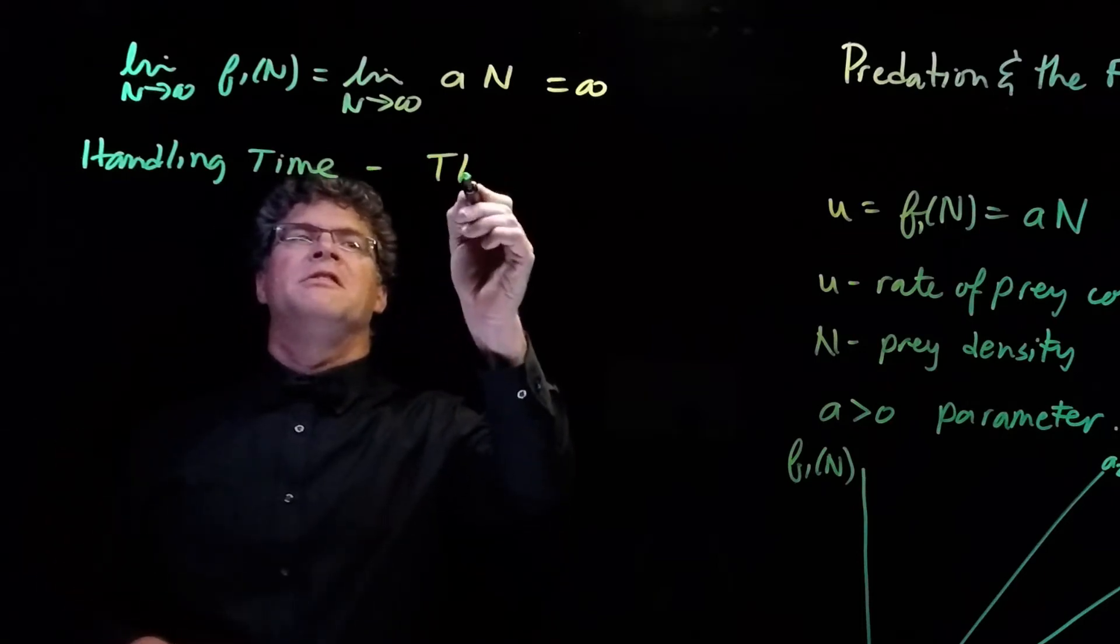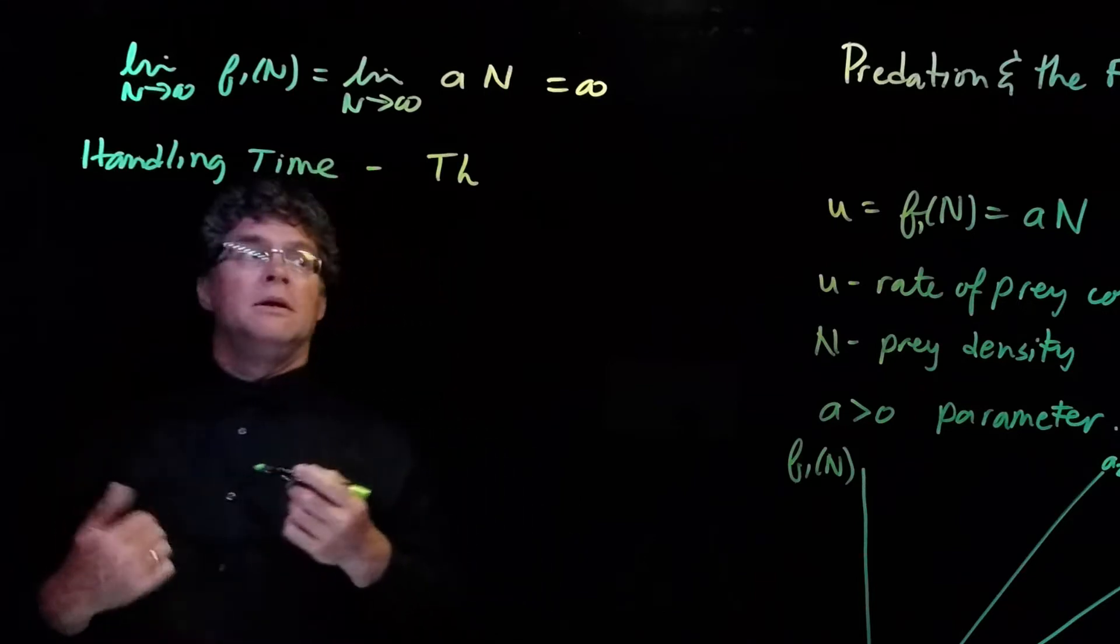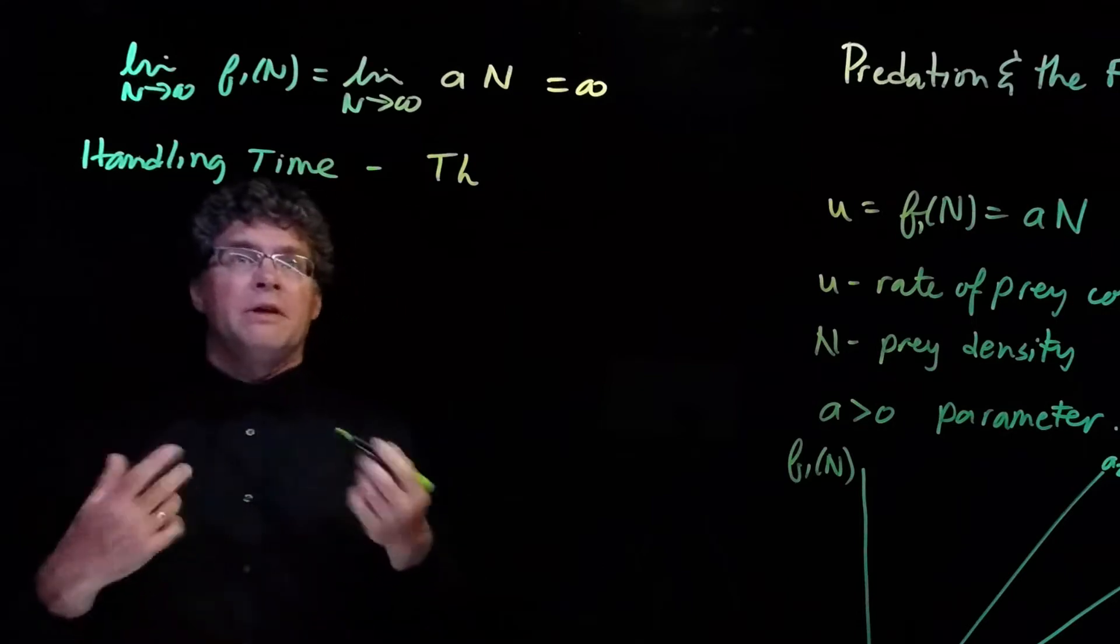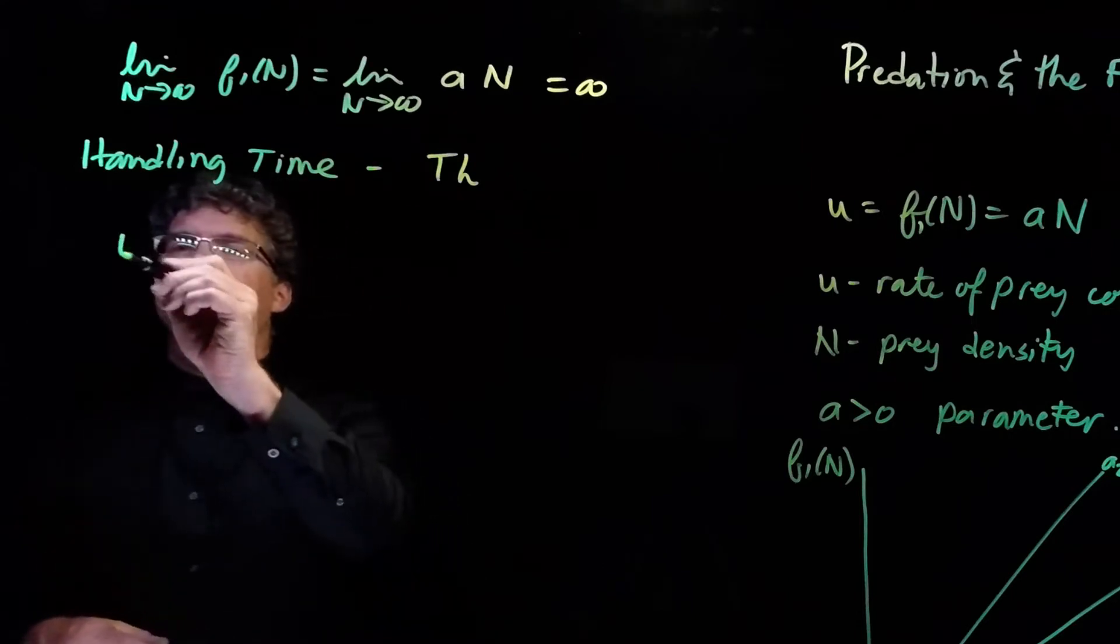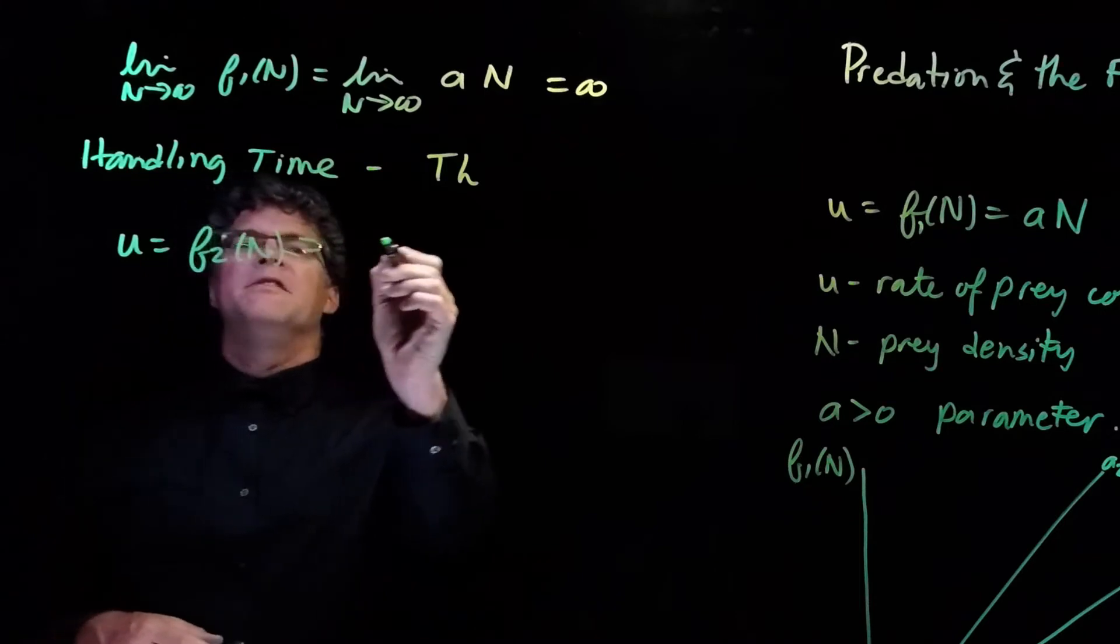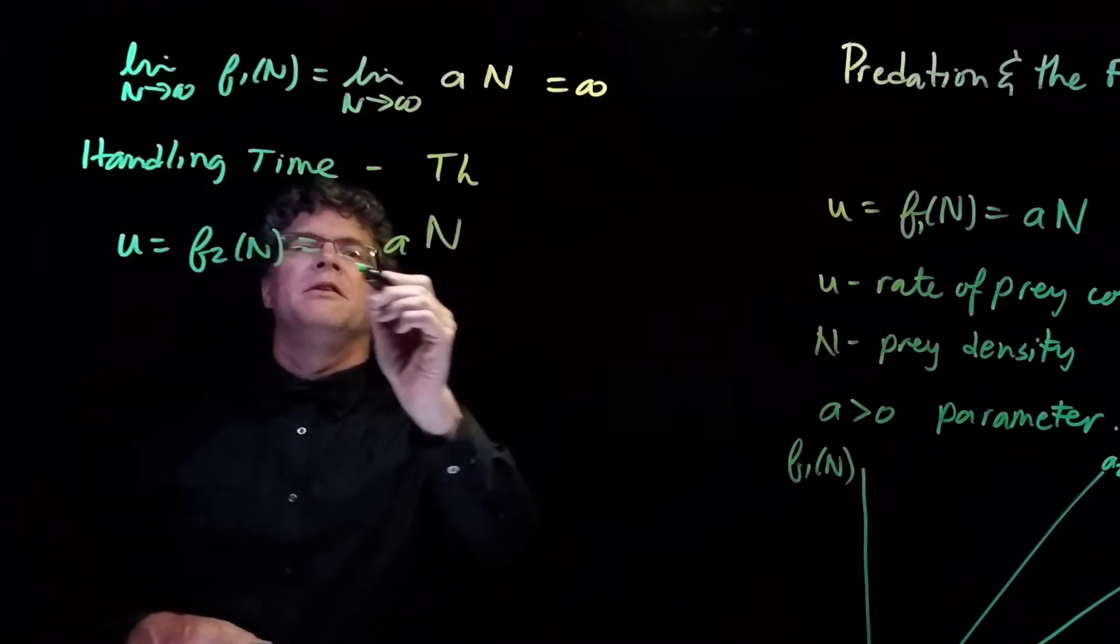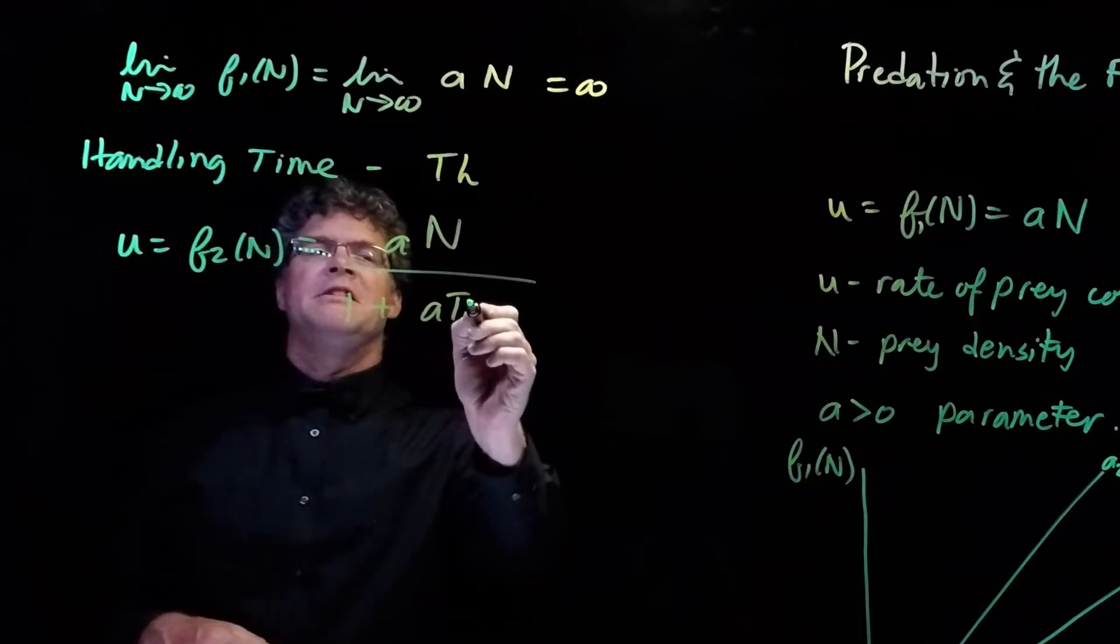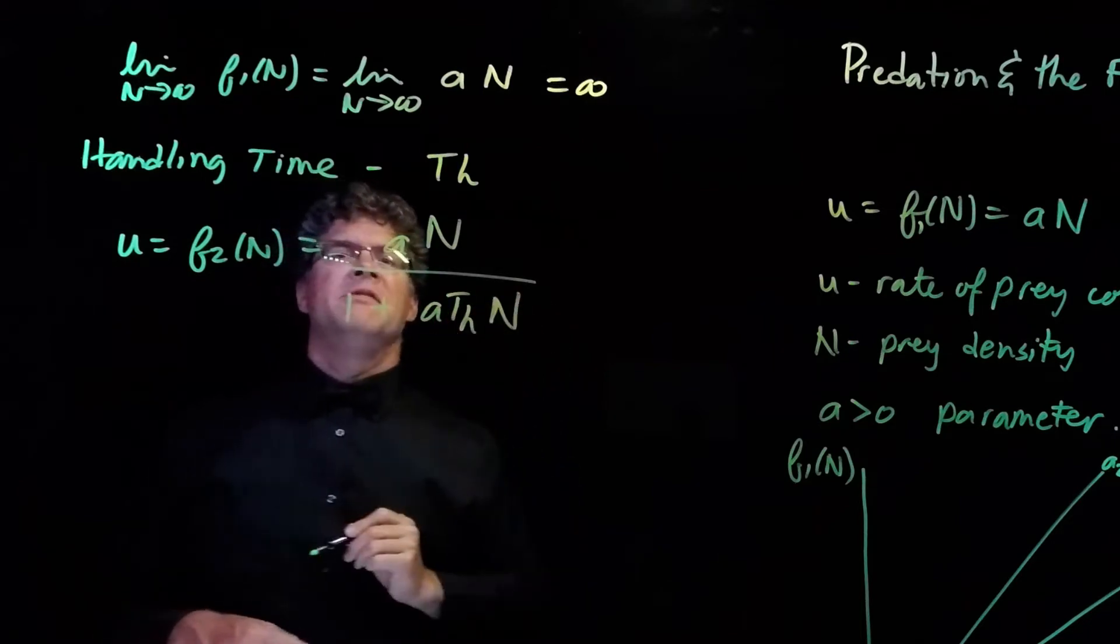And we're going to call this T sub h. The functional response with the handling time included is u equals f2 of n equals a times n, this part looks familiar, over 1 plus a times T sub h times n.